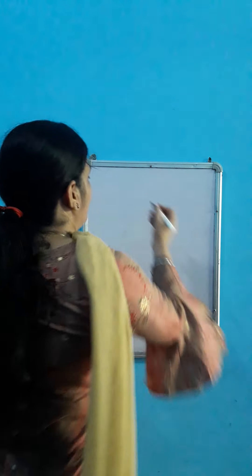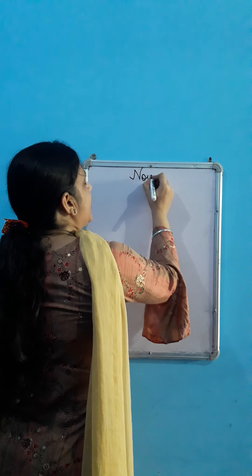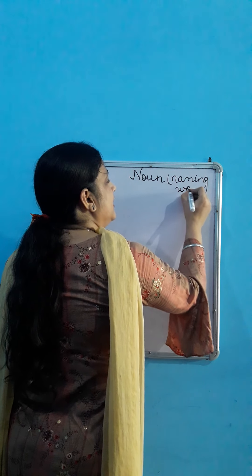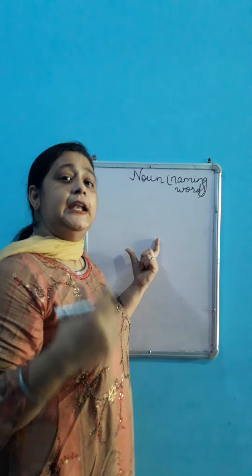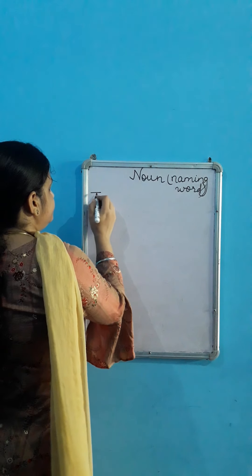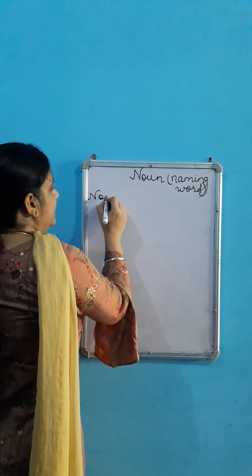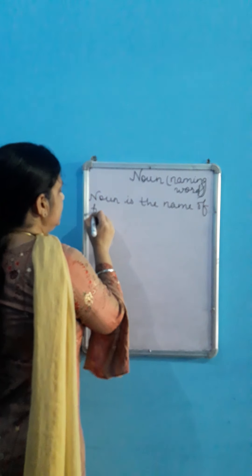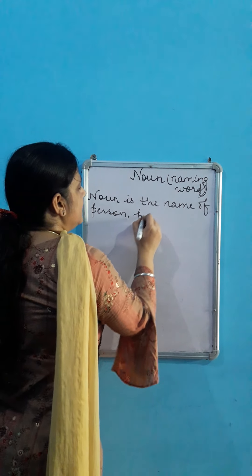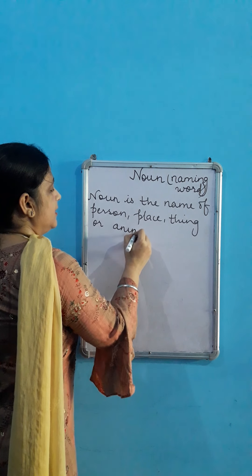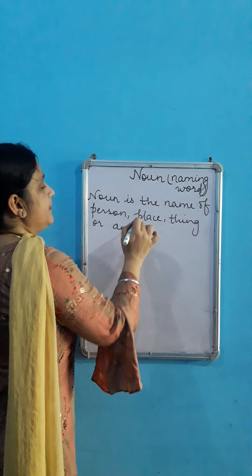Toh ye kisi bhi cheez ke naam ko hum kya kehte hai? Noun. So, our today's topic is noun. Noun kya hota hai? In short, we say nouns are called naming words. Noun kya hota hai? Ye naming words hota hai.